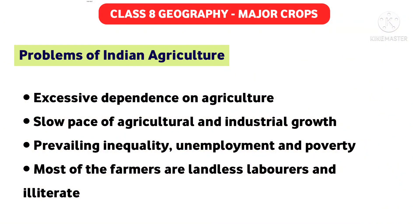Today, agriculture has been closely tied with a number of environmental and political issues such as water pollution, biofuels, genetically modified organisms, tariffs, farm subsidies, and so on. Along with these broader issues, farmers in India also face specific problems in Indian agriculture.